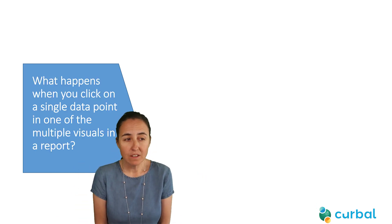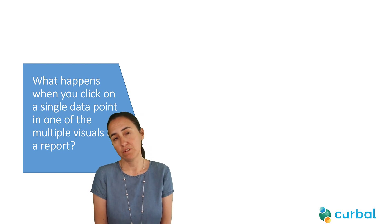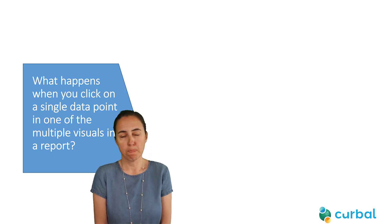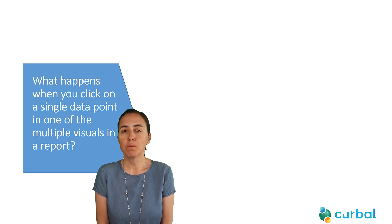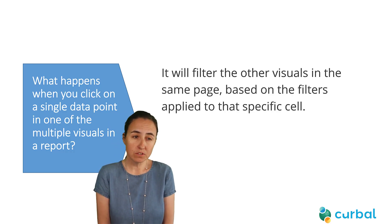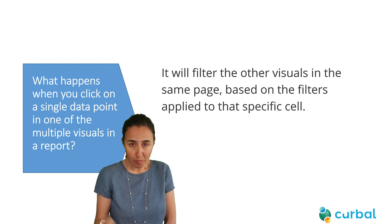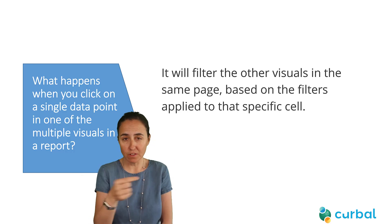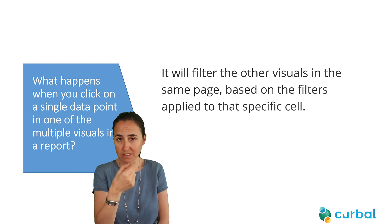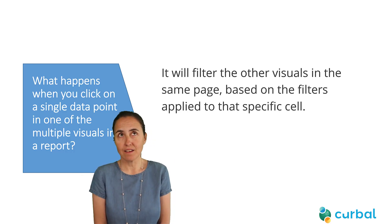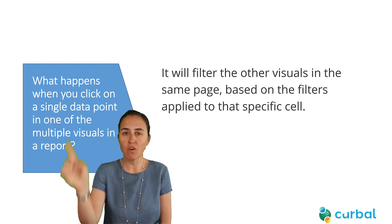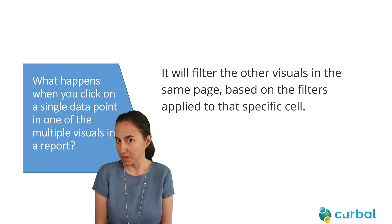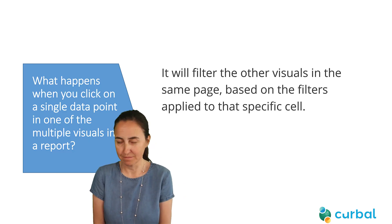What happens when you click on a single data point in one of the visuals in Power BI? It will filter all the visuals on the same page based on the filters applied to that specific data point. For example, if that data point represents Spain and you click on it, all other visuals on the page will get filtered by Spain.